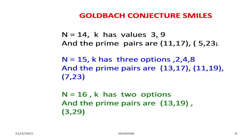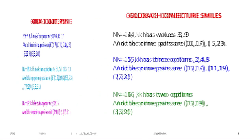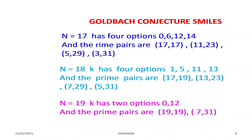n equals 15: k has three options, 2, 4, and 8, giving three pairs: (13, 17), (11, 19), and (7, 23). n equals 16: k has two options, giving pairs (13, 19) and (3, 29). n equals 17: four options, giving pairs (17, 17), (11, 23), (5, 29), and (3, 31).